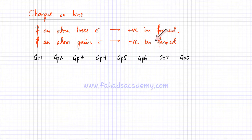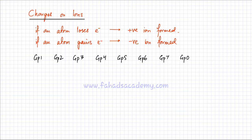The net negative charge would be on the ion. So if an atom gains one electron, it's going to have a minus one charge. If an atom gains two electrons, it will have a net negative charge of minus two.